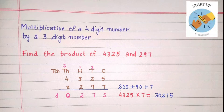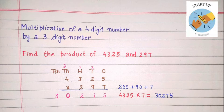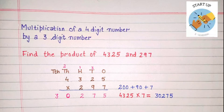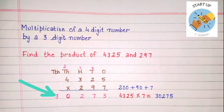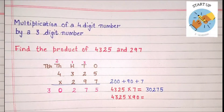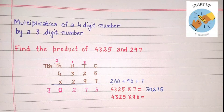Seven will be written under tens place and 1 will be carried to hundreds place. Seven will be multiplied by 3: seven threes are 21, plus 1 carried over, equals 22. Two will be written under hundreds place and 2 carried to thousands place. Seven multiplied by 4: 28 plus 2 carried over equals 30. So the first partial product is 30,275.